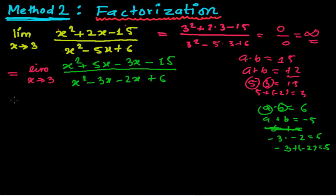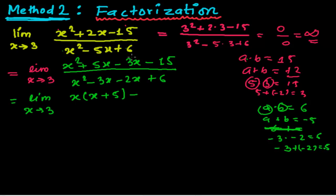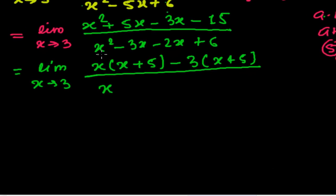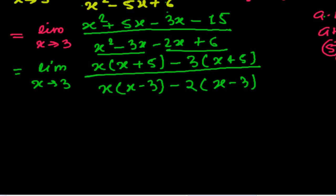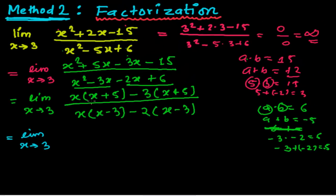Limit x tends to 3. In the numerator, taking x common from the first two terms gives x(x plus 5), and taking minus 3 common from the last two terms also gives minus 3(x plus 5). In the denominator, taking x common gives x(x minus 3), and taking minus 2 common gives minus 2(x minus 3).